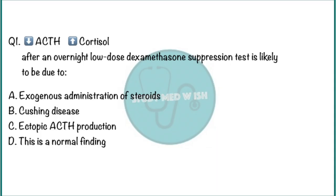Question 1: Low ACTH, high cortisol after an overnight low-dose dexamethasone suppression test is likely to be due to — option A, exogenous administration of steroids; option B, Cushing disease; option C, ectopic ACTH production; option D, this is a normal finding.